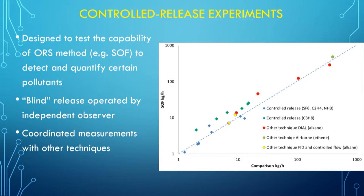On average, the typical uncertainty of the Solar Occultation Flux method is about 30%. By using lidars we may decrease this number a little bit, but that's roughly what it is.